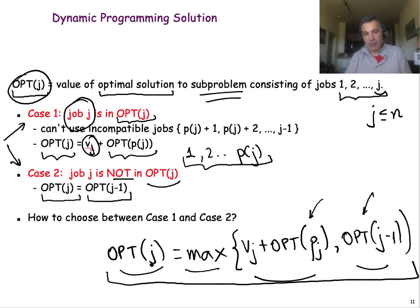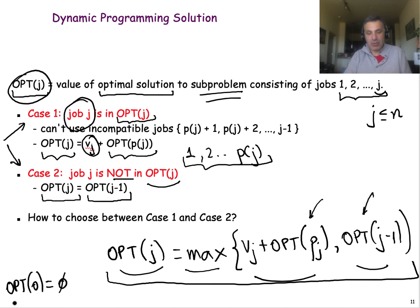We also need a base case. We define that the optimal solution when there are zero jobs is zero, because there is no value in that case.